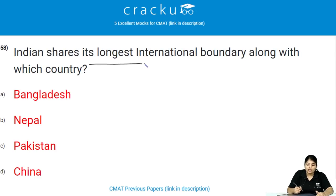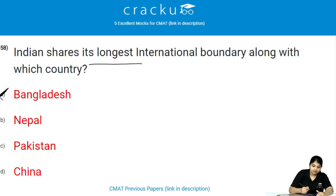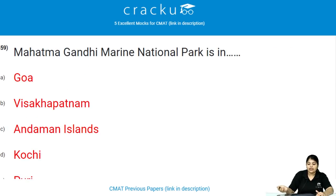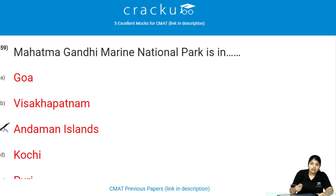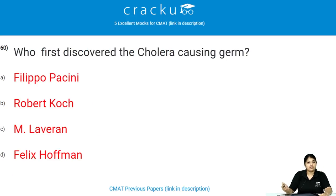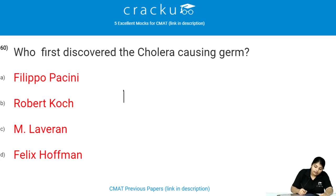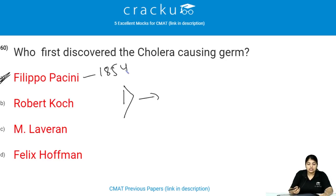India shares its longest international boundary with which country? It shares its longest international boundary with Bangladesh. Mahatma Gandhi Marine National Park is in the Andaman Islands, established in the year 1983. Who first discovered the cholera-causing germ? It was first discovered by Filippo Pacini in the year 1854.